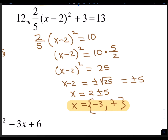For number 12, we're solving by the square root method. First, we'll subtract 3 — so 3 from 13 leaves you with 10. Now we have to divide by the fraction 2 fifths. But when you divide by a fraction, you multiply by its reciprocal. The reciprocal of 2 fifths is 5 over 2. So we multiply 5 over 2 times 10. 5 times 10 is 50, divide by 2 and you get 25. Now take the square root: x minus 2 is plus or minus the square root of 25, which is plus or minus 5. Then move the 2 over to the right by adding. So x is 2 plus or minus 5. 2 minus 5 is negative 3, and 2 plus 5 is 7.